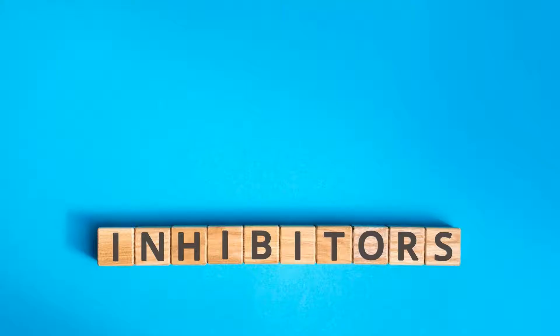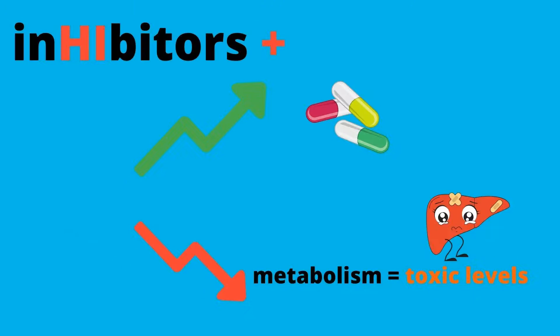Let's start off with inhibitors. When you look at the word inhibitors, you see there is 'hi' in the word — and that should help you remember what inhibitors do. I have the word inhibitor with 'hi' colored in red to help you remember that it's high. Inhibitors increase the drug level because they decrease the processing of the drug, or there is a decrease in the activity of the drug, so there is a buildup — too much drug in the system.